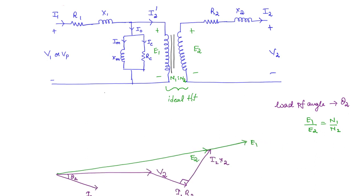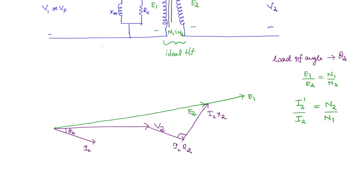Once you know E1, then you can focus on the primary side parameters. We want the drop across the primary elements, and for that we need I1. But I1 is in turn equal to I0 and I2 dash. So we first need to draw I2 dash and I0. I2 dash is straightforward — you can get it from the current ratio. I2 dash by I2 equals N2 by N1. Basically, I2 dash is going to be in the same phase as I2, but since it is a step-down voltage transformer, the current is stepped up, meaning I2 dash is going to be lesser than I2. So in the phasor diagram, this we will take as I2 dash and this we will take as I2.